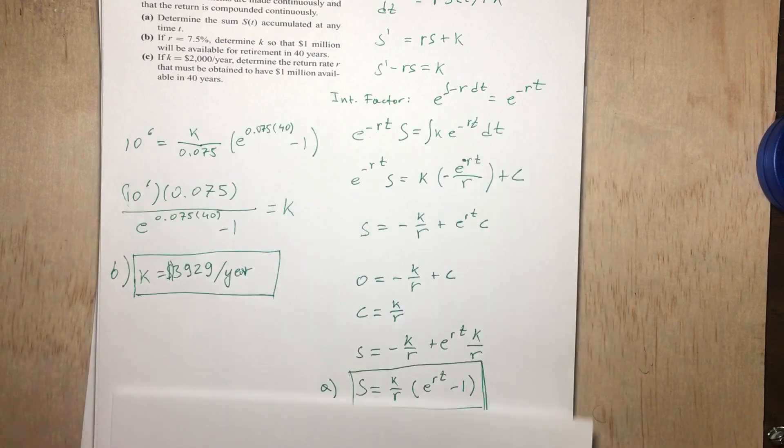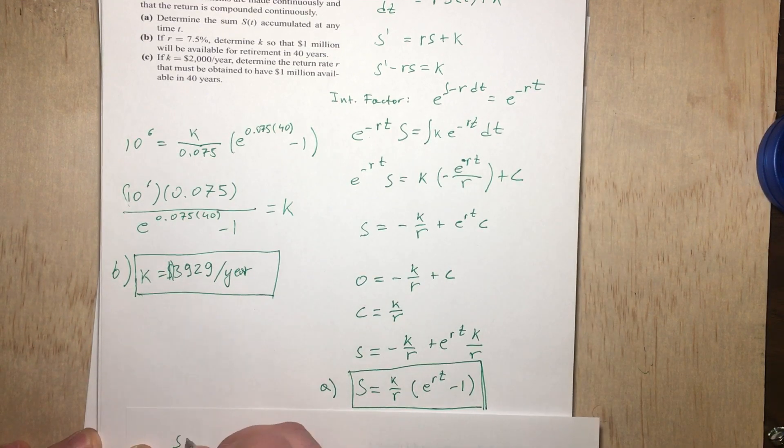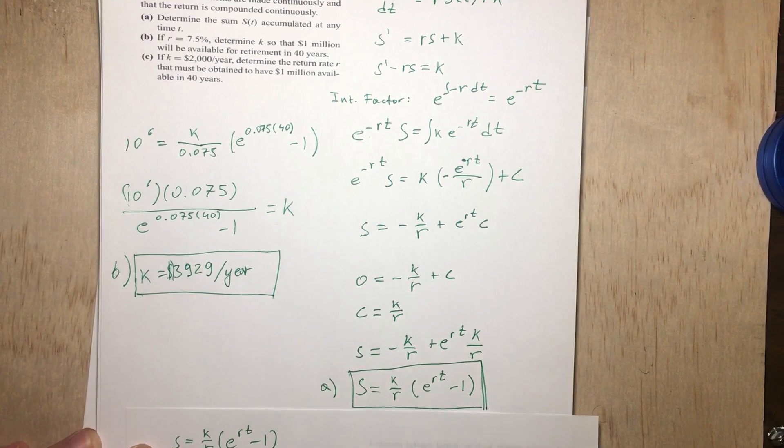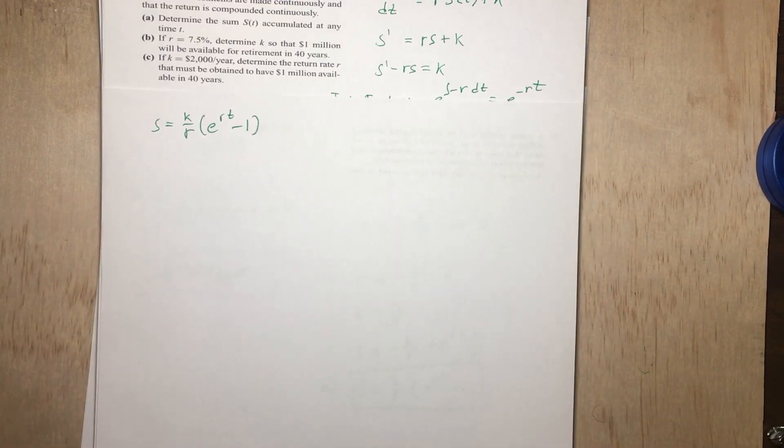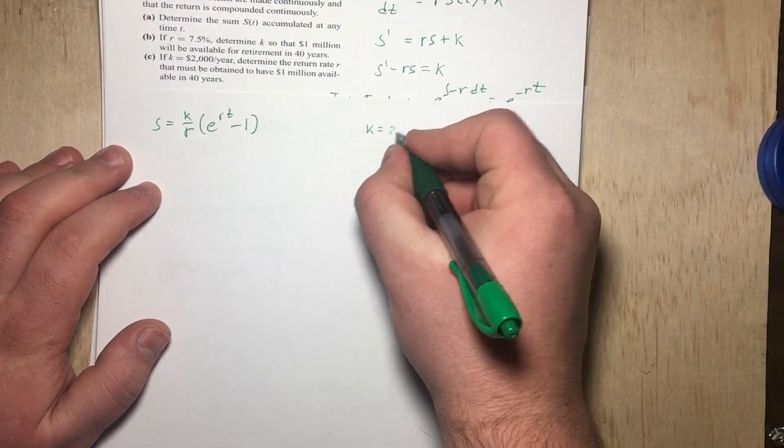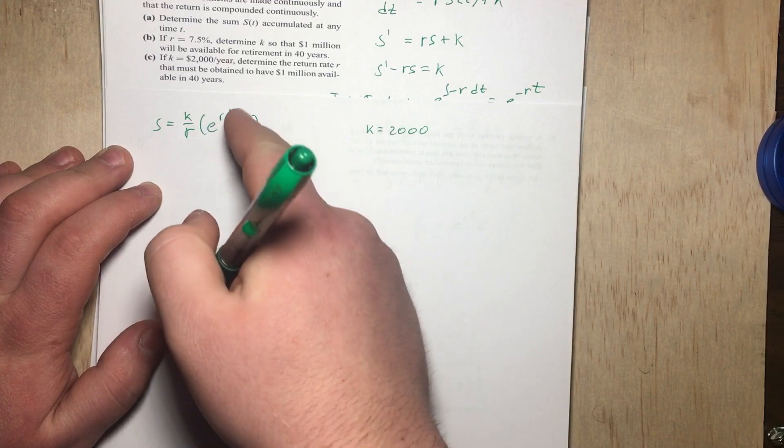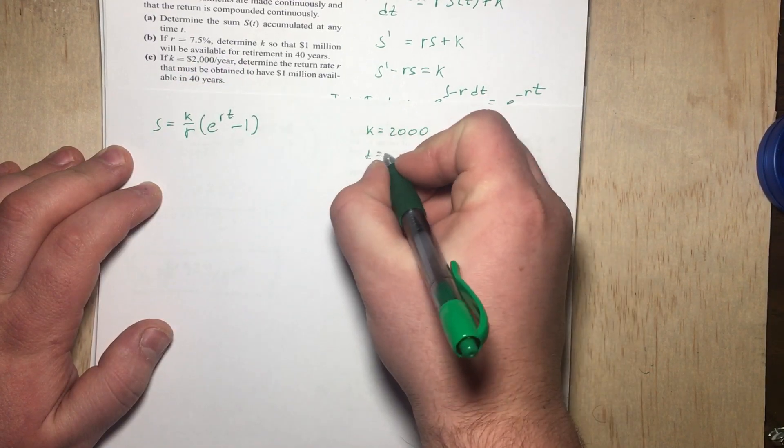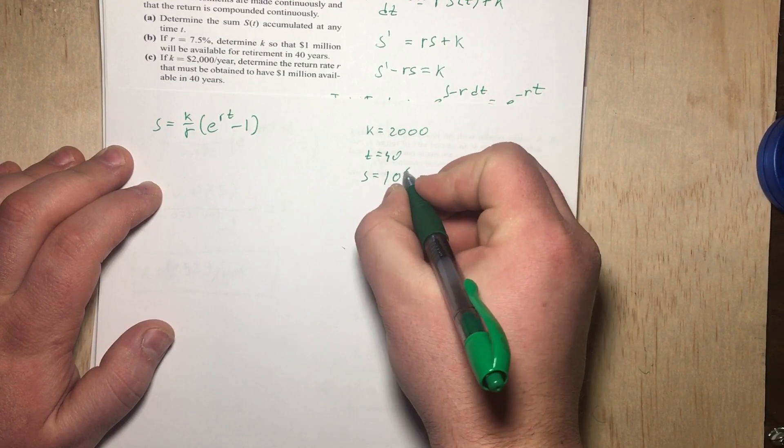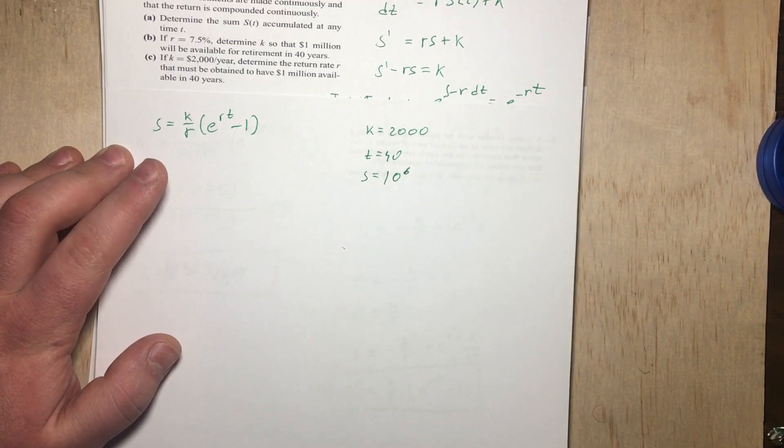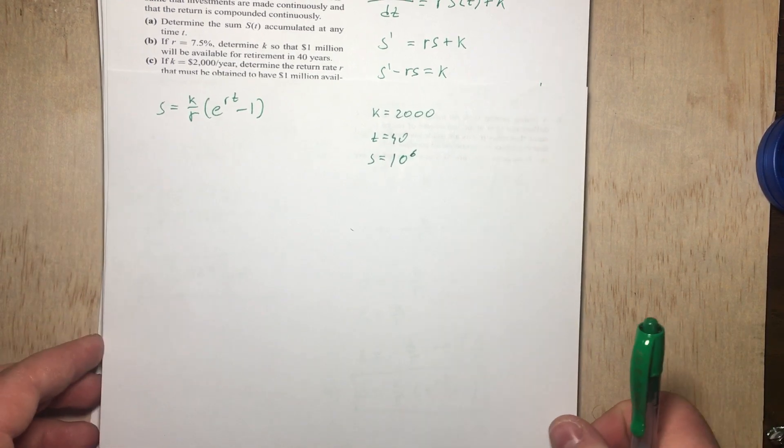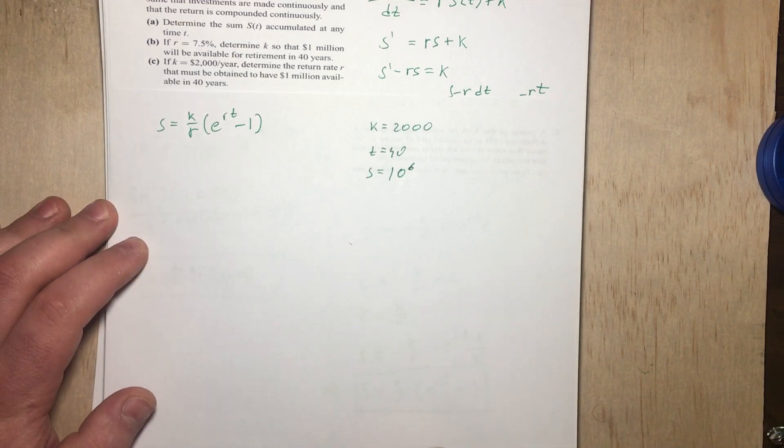So we still know that the formula is S = K/R(e^(Rt) - 1), right? That is the formula we derived in part A using differential equations. And now we know that K is going to be $2,000 per year. We also know that time is going to be 40 years. And we're trying to find, oh, so we know S = 10^6, which is $1 million. And we're trying to find R.